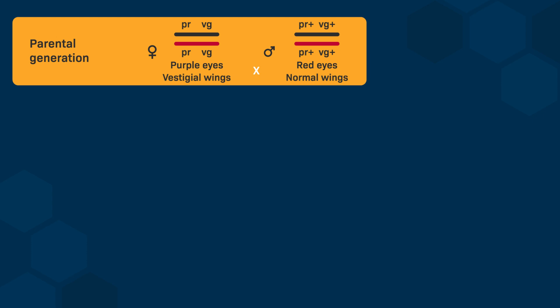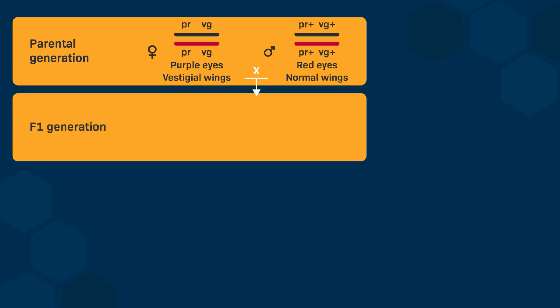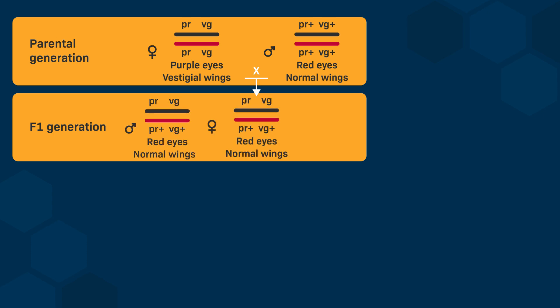In the first generation, denoted as F1, 100% of the progeny receive a copy of the PR allele and a copy of the PR-plus allele from each parent. They also receive a copy of the VG allele and a copy of the VG-plus allele from each parent. The phenotype of this F1 generation has red eyes with normal wings, indicating that PR-plus is dominant over PR, and VG-plus is dominant over VG.